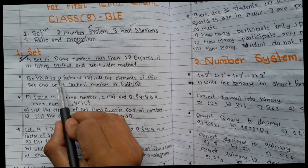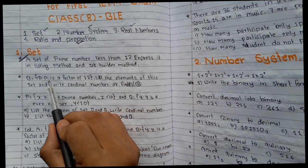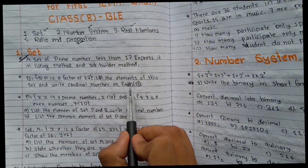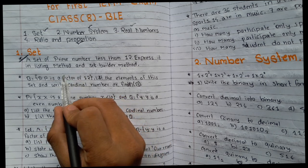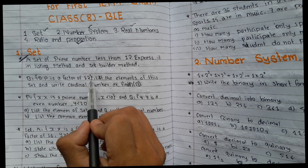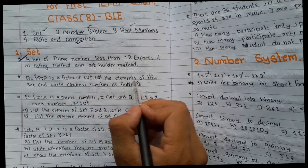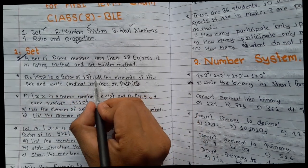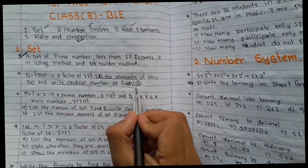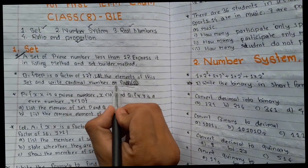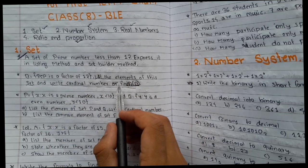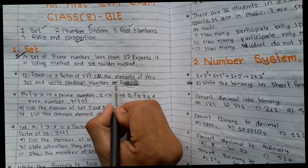B is equal to P such that P is a factor of 2 BLE. List the elements of this set and write the cardinal number, or find n(B). This equation is going to be practiced in the exam. In the set builder method, list the elements of this set. The factor of 2 BLE is going to be listed. There are 3 elements. The cardinal number needs to be written carefully.